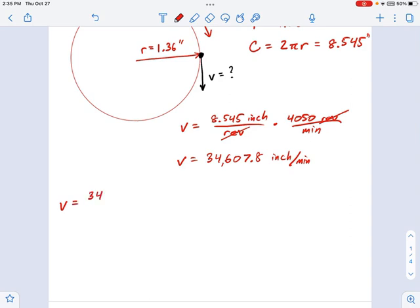Let's take what we know, which is 34,607.8 inches per minute. And now we have to change this using some unit conversions to not be inches per minute, but be miles per hour. There's one foot per 12 inches. That's going to cross out these inches over here. And we also know there is one mile per 5,280 feet. So that's going to cross out the feet units.